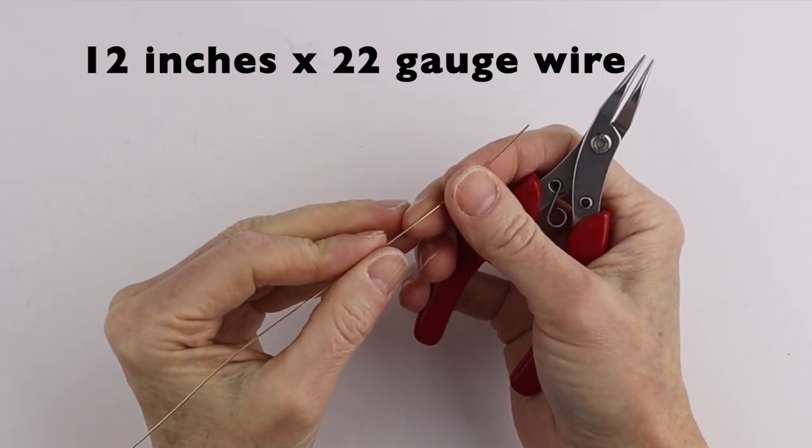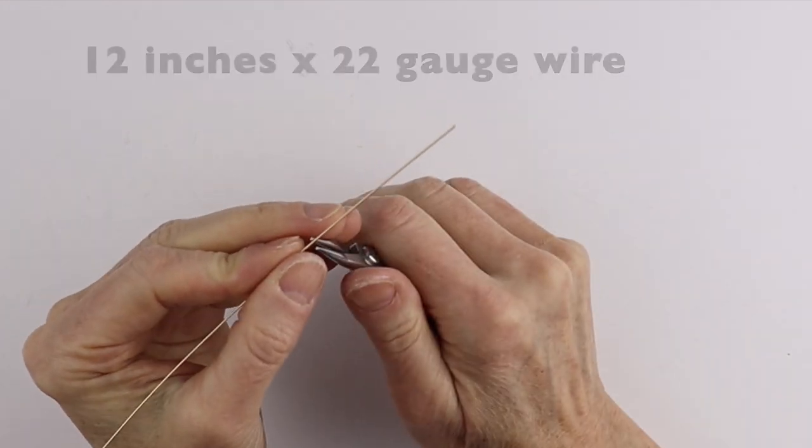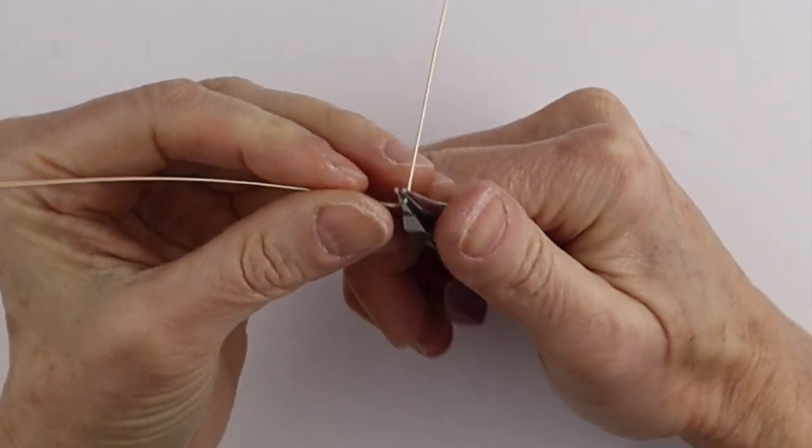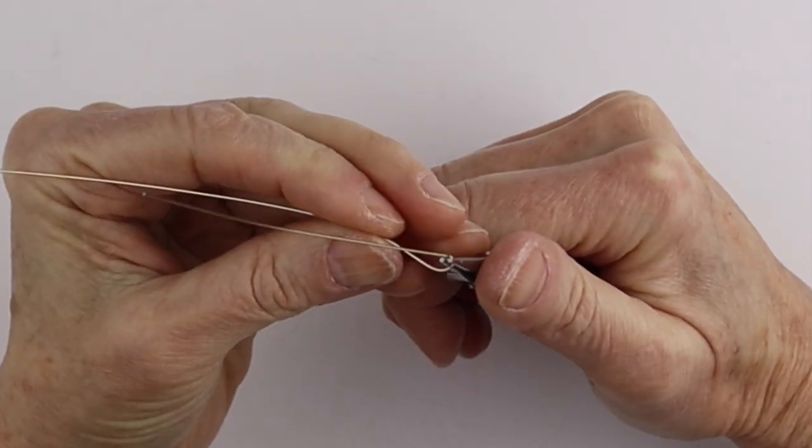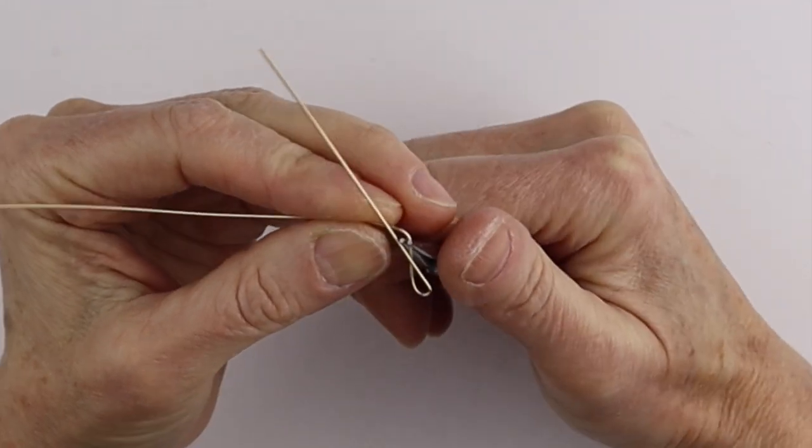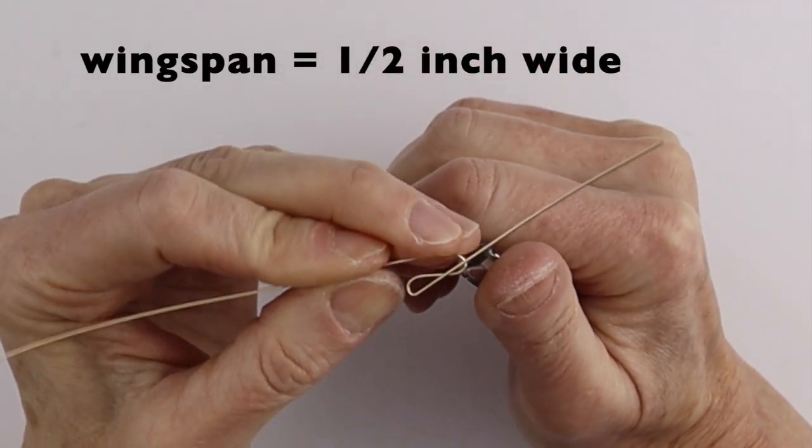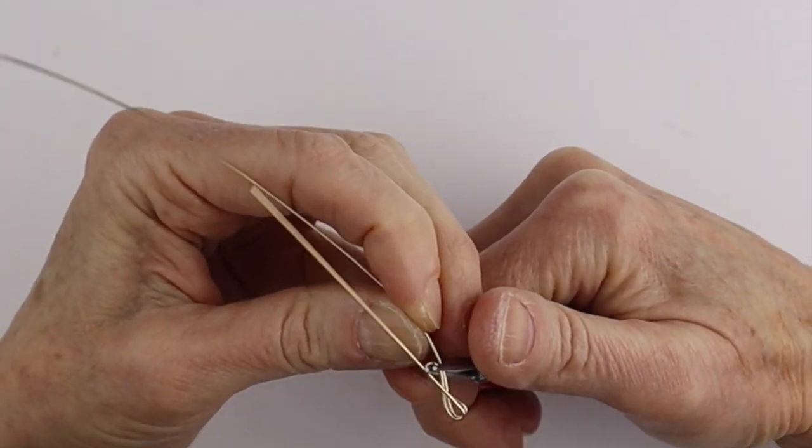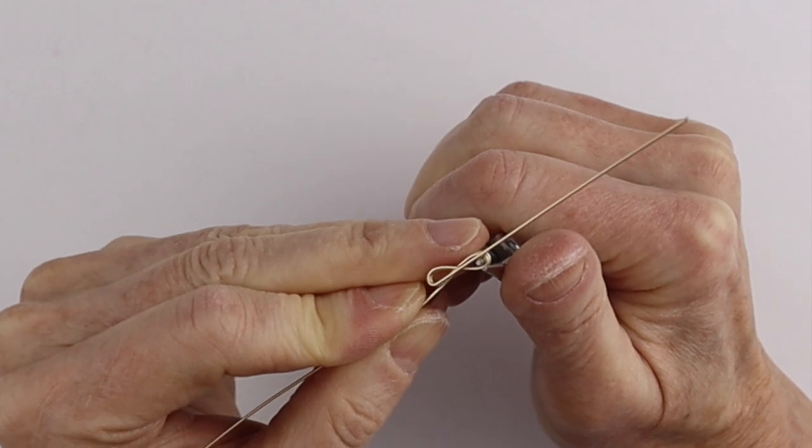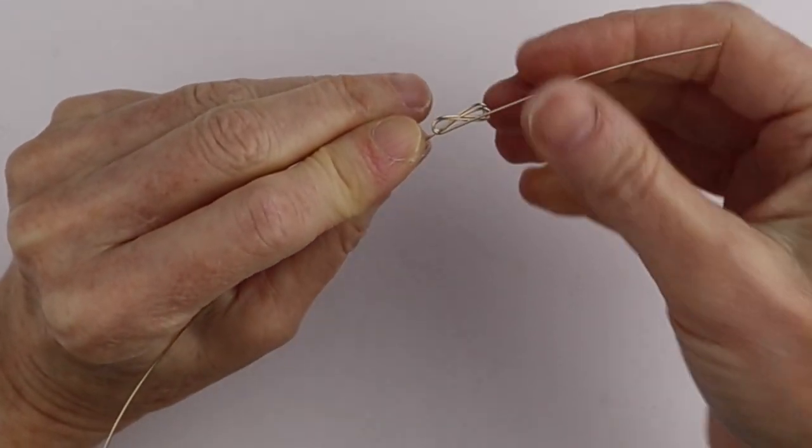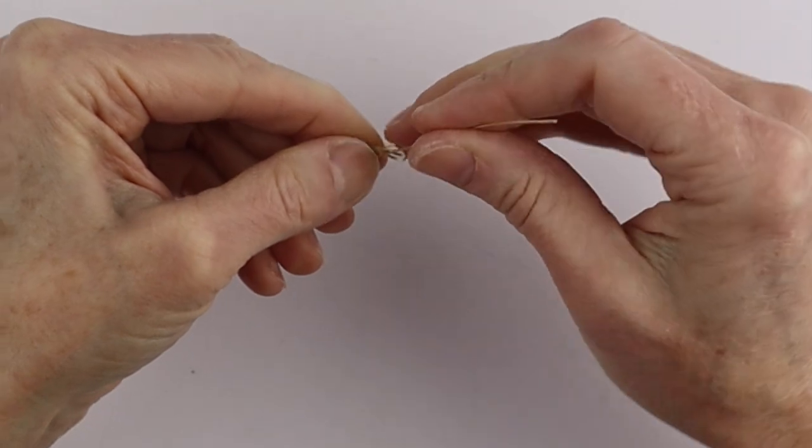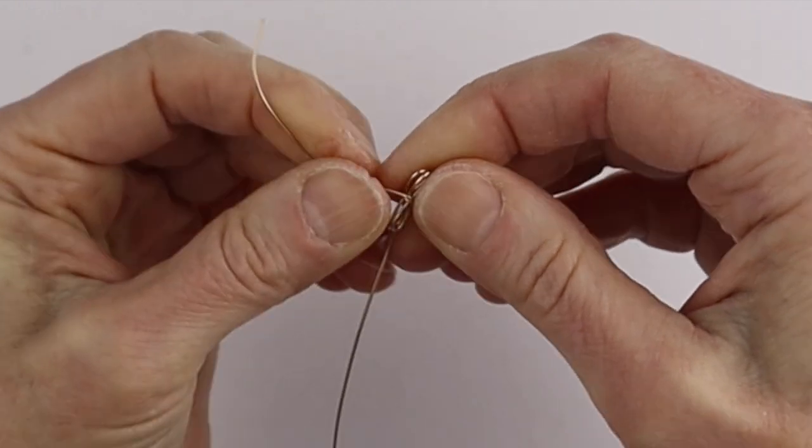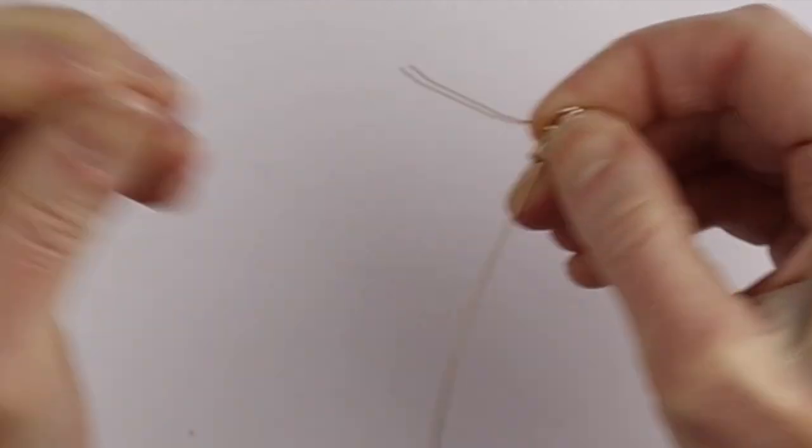So now I have about a 12 inch piece of 22 gauge wire and I'm going to form the wings. So we're just going to take this and go across and then across here. You can make it about half an inch wide and then here and here. So once we have, it's like an infinity sign. We're going to take one of them, the shorter one, bring it around and up.